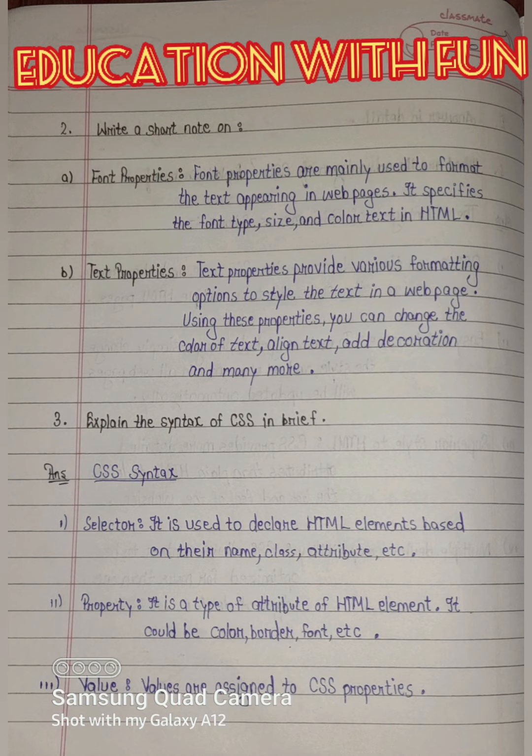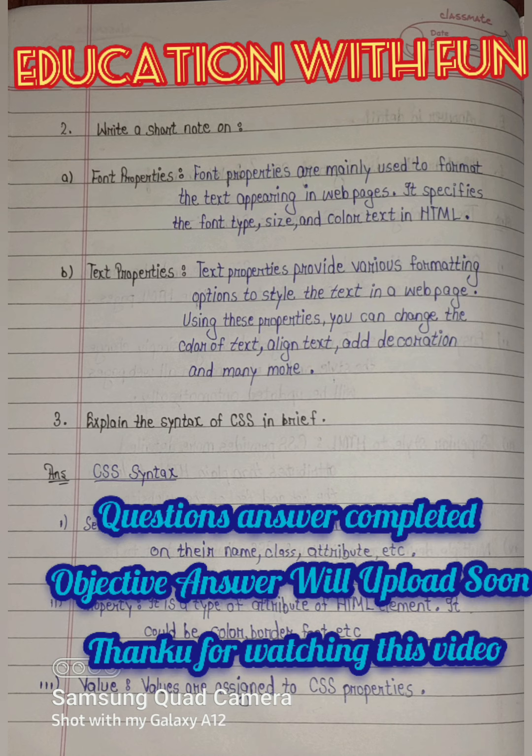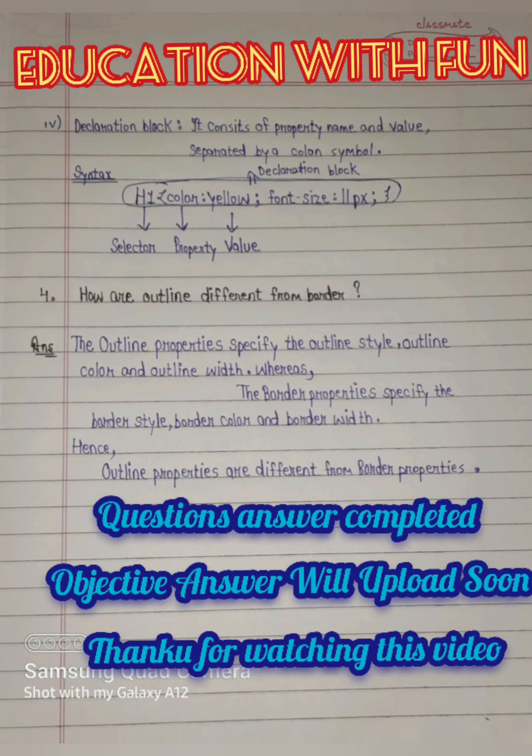Question three: Explain the syntax of CSS in brief. CSS syntax consists of a selector, which is used to declare HTML elements based on their name, class, attribute, etc. A property is a type of attribute of an HTML element — it could be color, border, font, etc. Values are assigned to CSS properties. A declaration block consists of a property name and value separated by a colon. For example: h1 { color: yellow; font-size: ... } — here h1 is the selector, color is the property, yellow is the value, and the whole pattern is the declaration block.